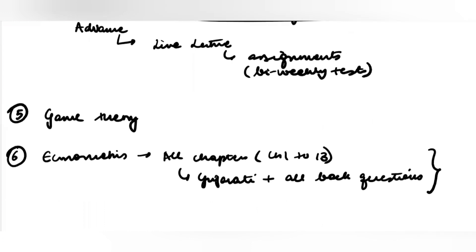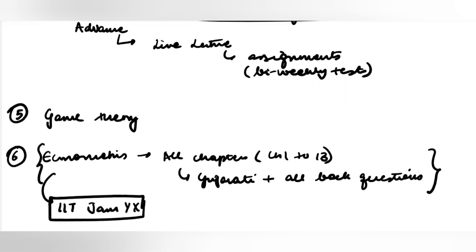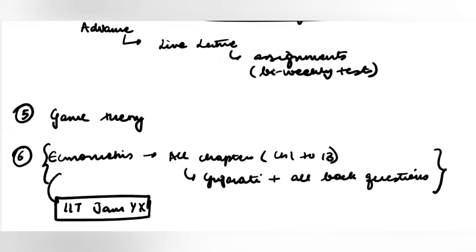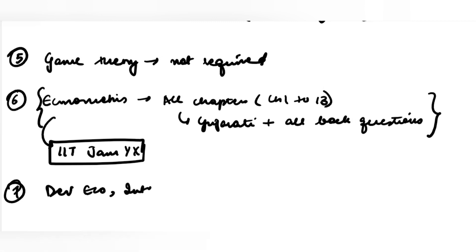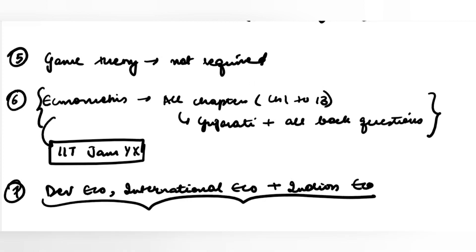Econometrics is not required in much detail for IIT JAM — only the first four or five chapters are enough for that exam. Game theory is also not required in detail for IIT JAM. Then you have to read some part of development economics, international economics — only lecture videos are enough for these. And for Indian economics as well, only lecture videos are enough. Thanks for listening everyone, bye-bye.